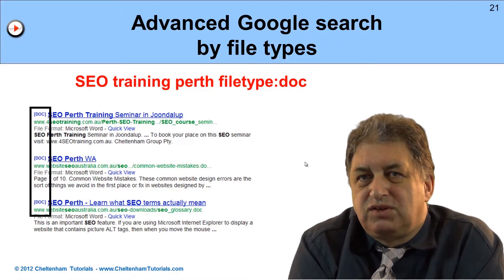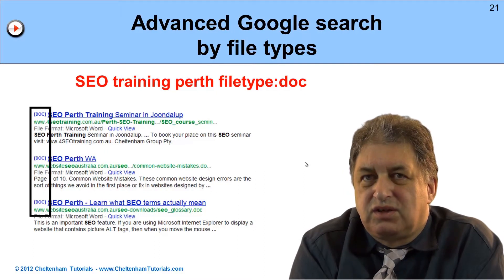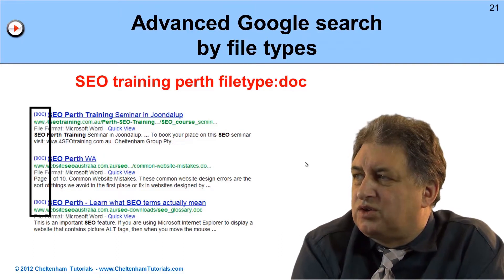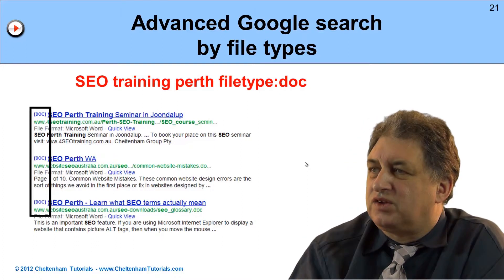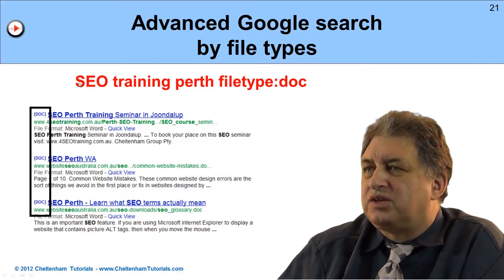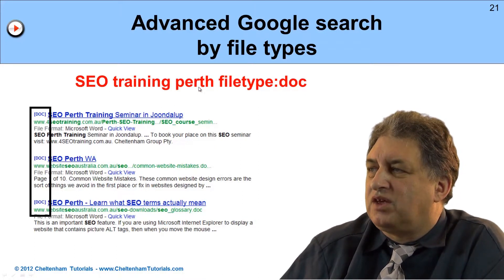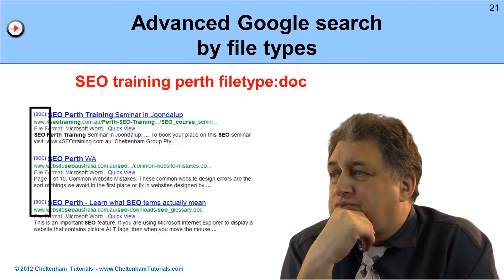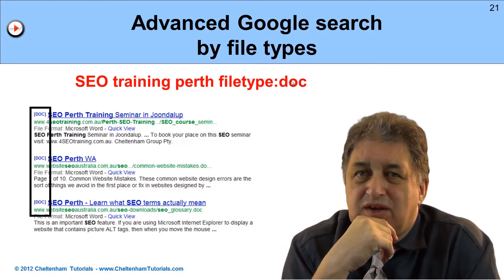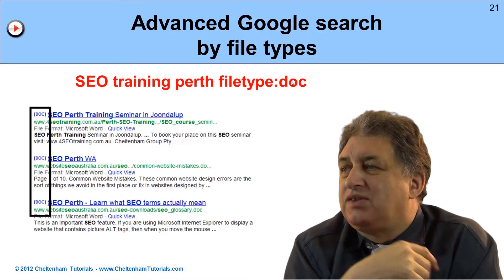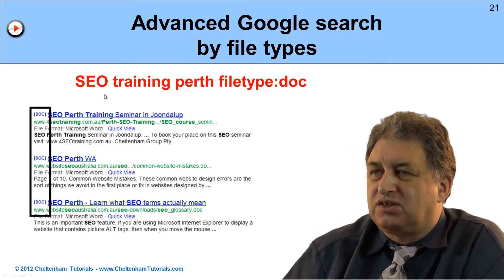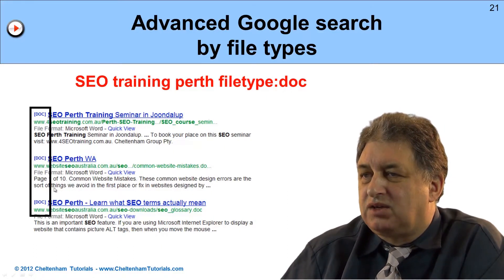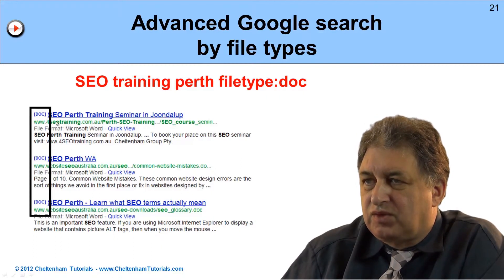We're using Google here to do research and find other websites that use your keywords or phrases in different ways. We can also search by file type. For instance, searching for 'seo training perth' with 'filetype:doc' shows websites that have a Word document containing those terms. As you can see in these search results, they're prefixed by 'doc,' indicating Word documents, and in this case they're all from SEO websites.